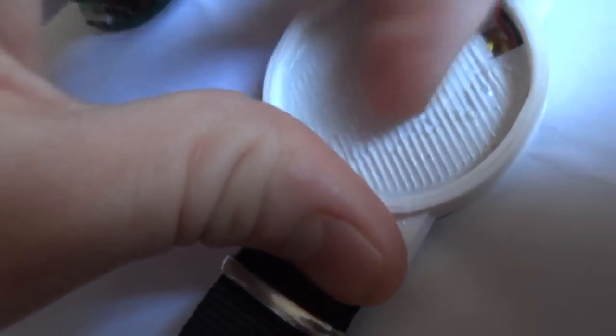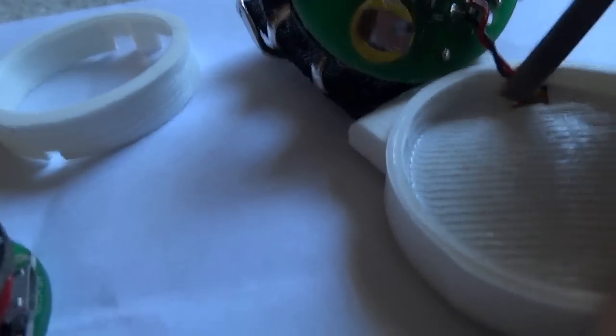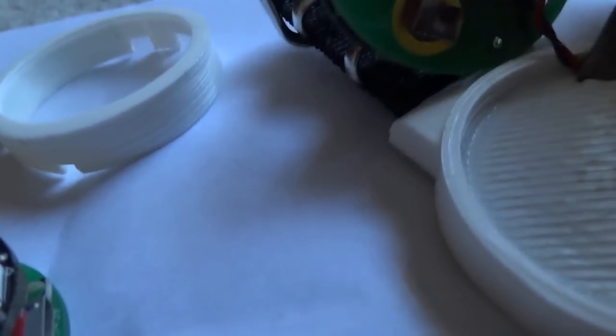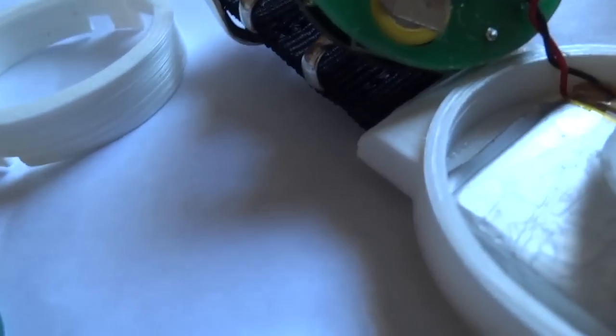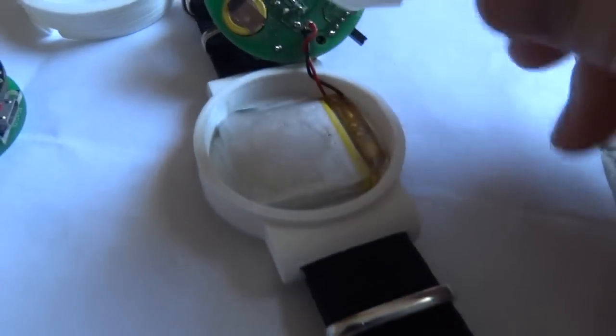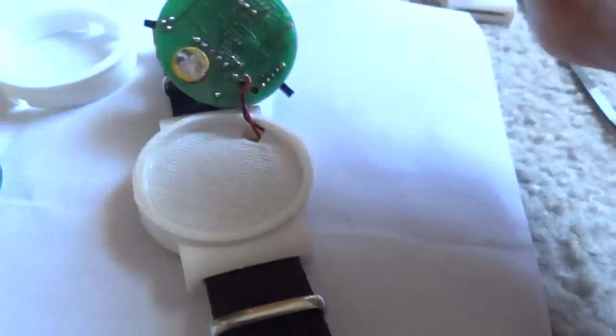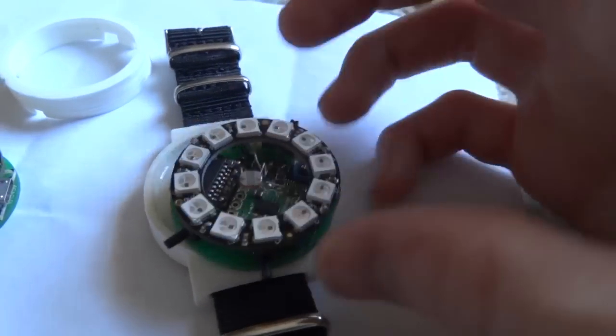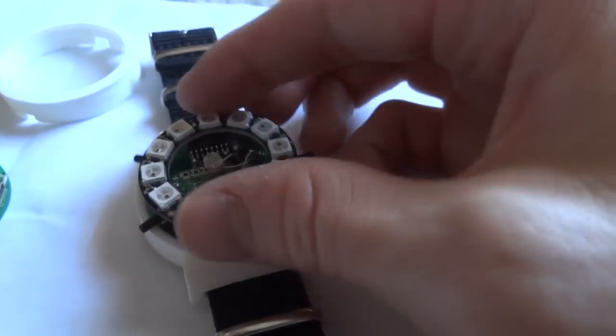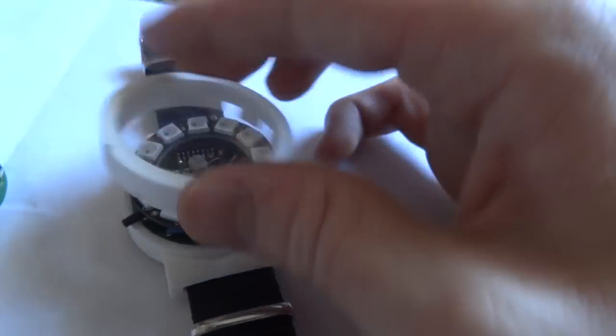Down here I've got a little separator. This is like not even a millimeter thick. This just separates the board from the battery so it doesn't damage the battery. The battery's down there at the bottom, you've got the divider, then the board, and then the top casing.